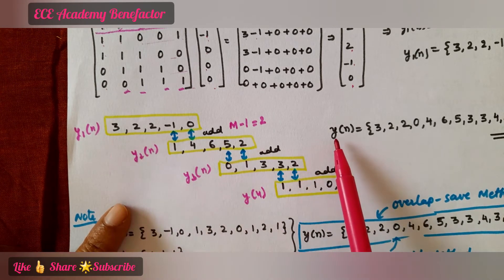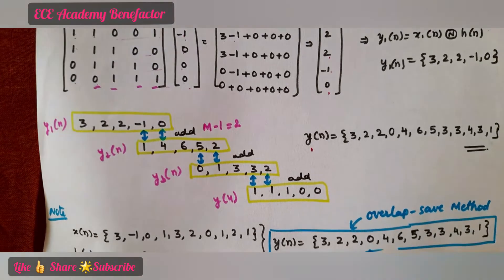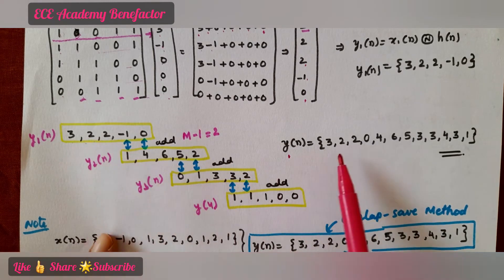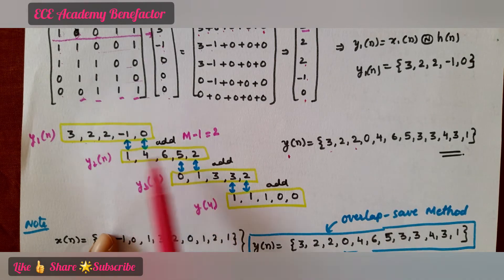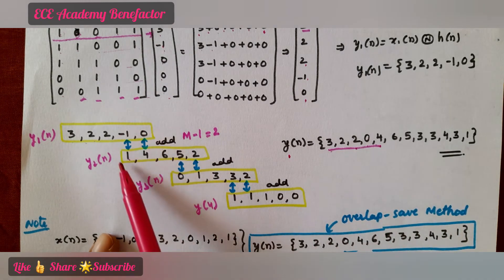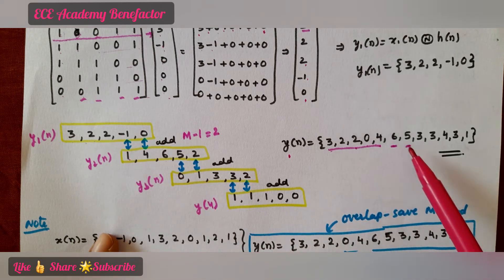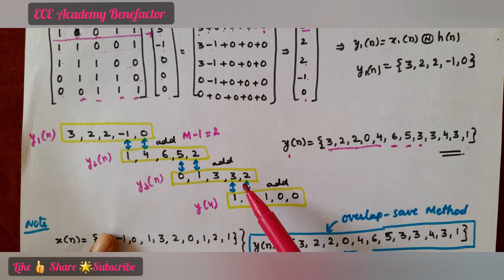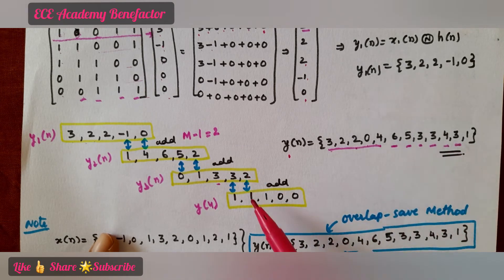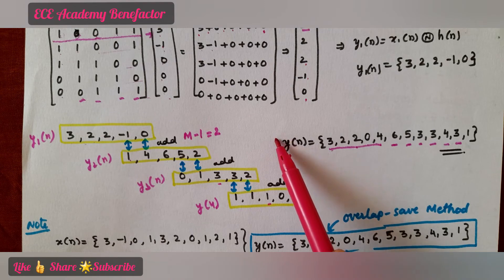To write the final y(n): take {3, 2, 2} from y1(n); then -1 + 1 = 0, 0 + 4 = 4; then from y2(n) leftover: 6; then 5 + 0 = 5, 2 + 1 = 3; then 3 + 1 = 4, 3 + ? continuing the additions, 2 + 1 = 3; then you are left with 1. So the final result y(n) = {3, 2, 2, 0, 4, 6, 5, 3, 4, 3, 1}.